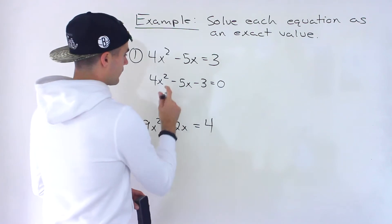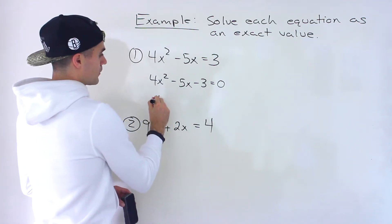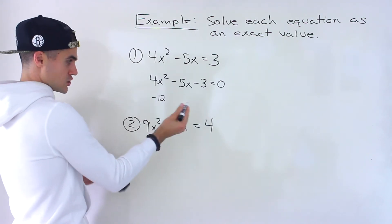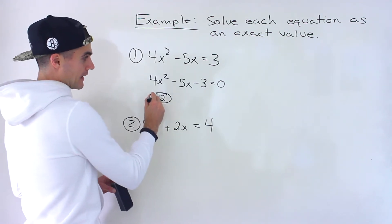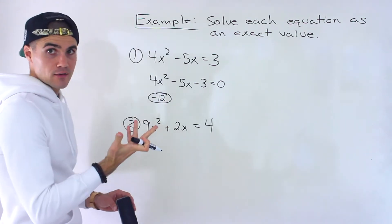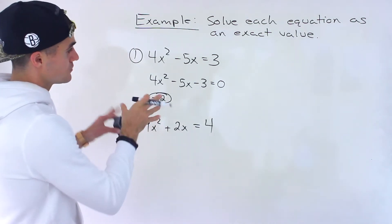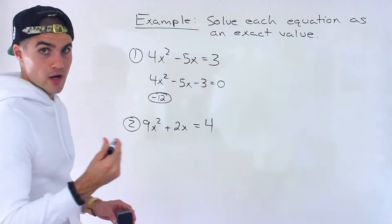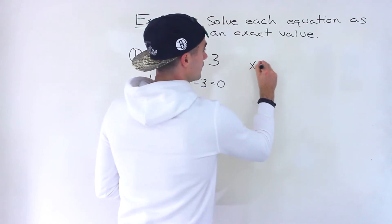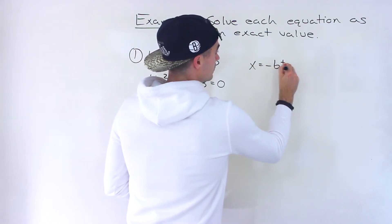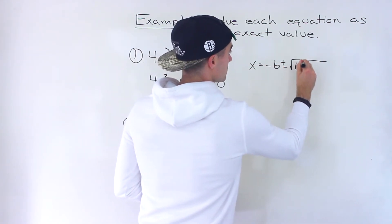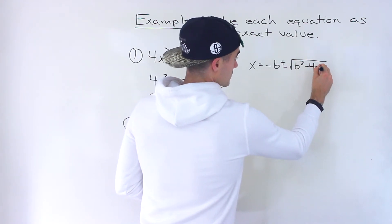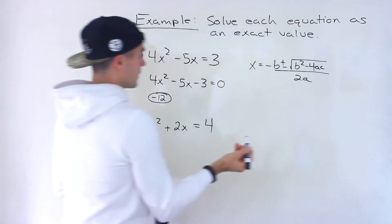Notice that if we multiply the four and the negative three, that would give us negative 12. And there are no integers that multiply to negative 12 and add up to negative five. So we can't do this by decomposition — we can't factor it. And so we're going to have to use the quadratic formula: negative b plus or minus the square root of the discriminant, which is b² - 4ac, all over 2a.